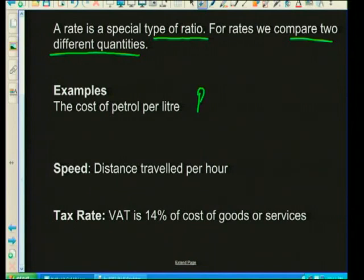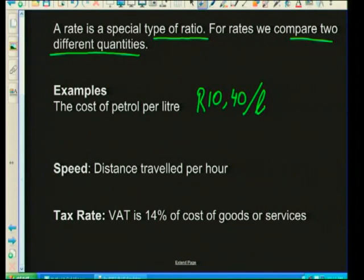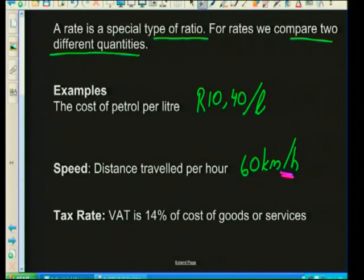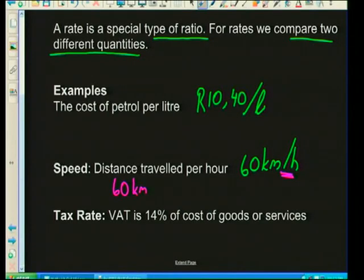For example, the cost of petrol per litre: we have the number of rands — about 10 rand 40 — per litre. We've got rands and litres, two different quantities, but for every one litre it costs 10 rand 40. Another example is speed — the distance we travel per hour: 60 kilometres per hour. In our heads we just think of the 60, but this actually means we're travelling 60 kilometres in one hour. So my fraction is 60 over 1.